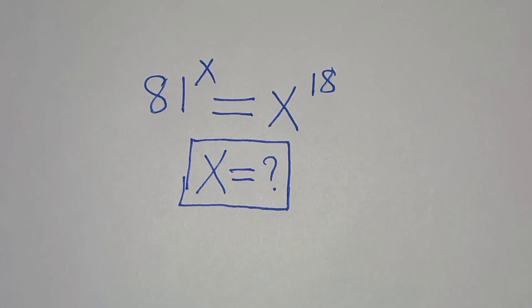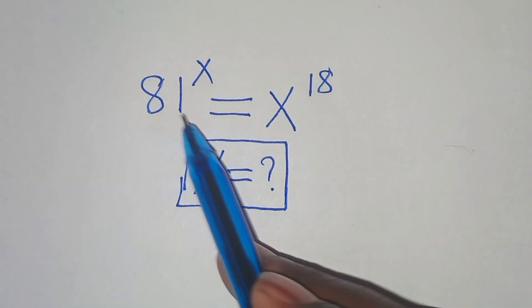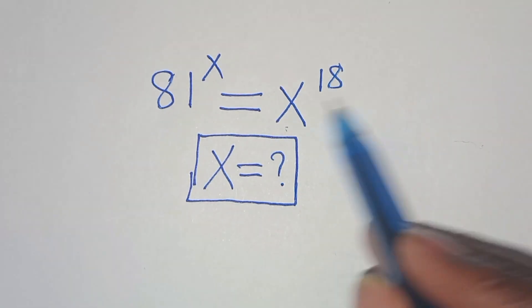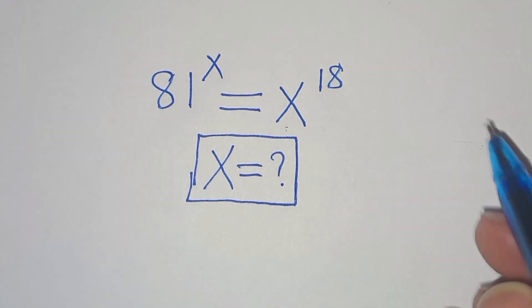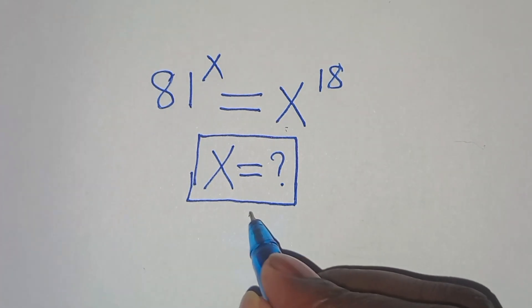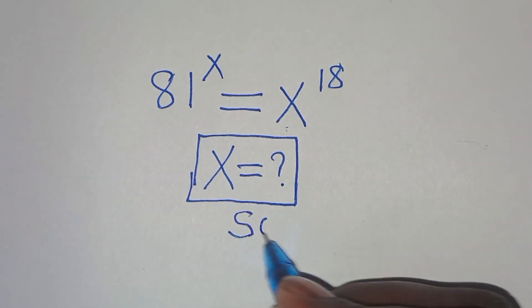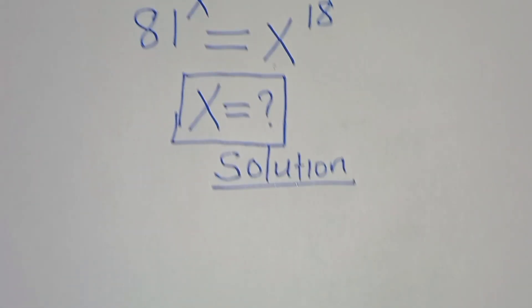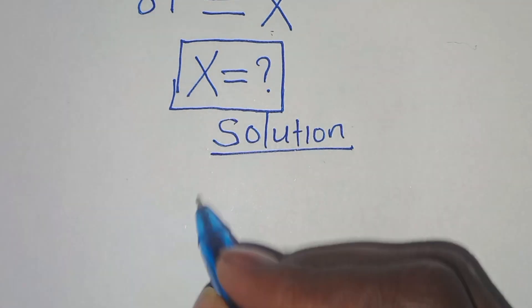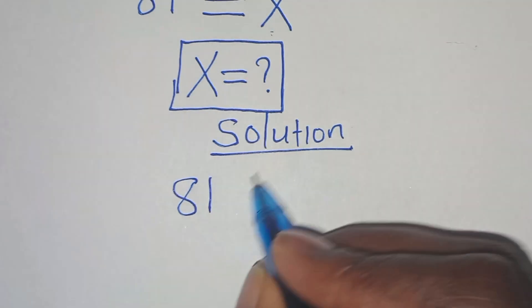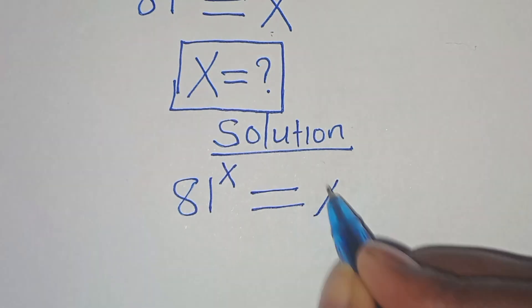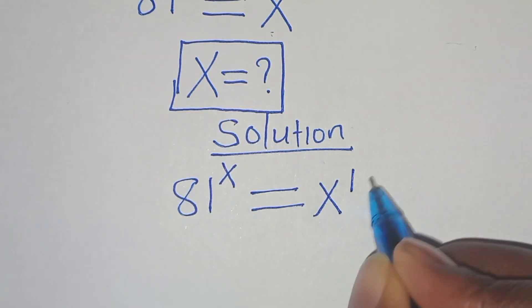Welcome to solve this algebra problem: 81 to the power of x is equal to x to the power of 18. This is the value of x we need to find. Let's provide a solution. We have 81 raised to the power of x, which is equal to x to the power of 18.